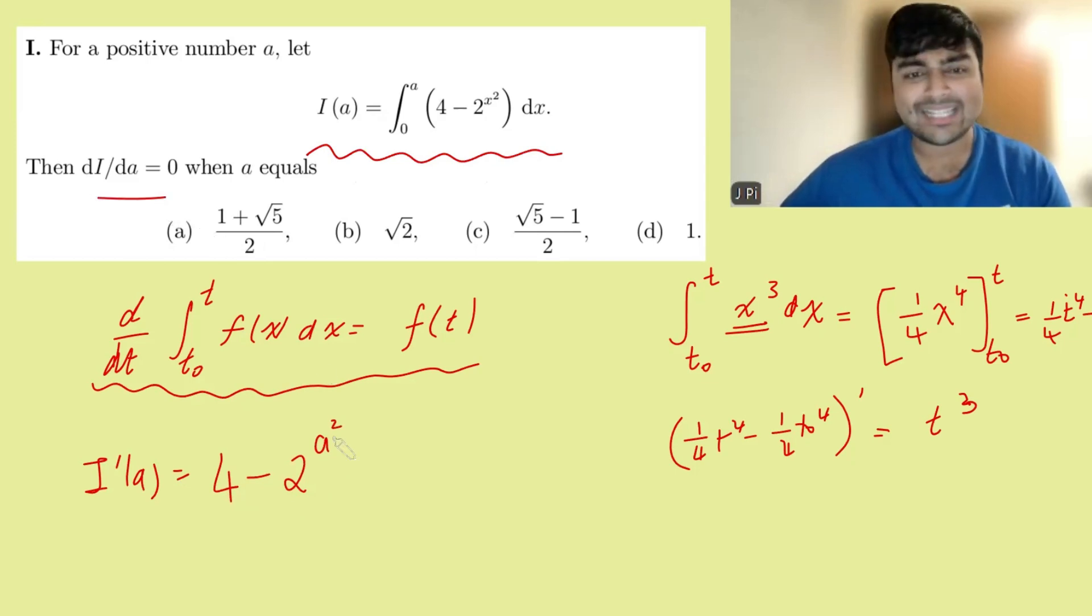And we want to know when is that zero? So 4 - 2^(a²) = 0. That just means that a² must be 2. And since a is a positive number, this must mean that a equals √2, and the answer is b.